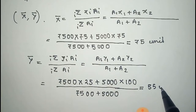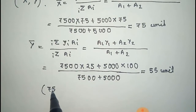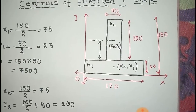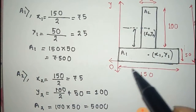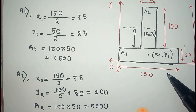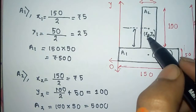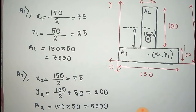Thus we get the coordinate point of the centroid as (75, 55) with respect to the XY-axis. Looking at this point — 75 along X and 55 along Y — this point can be taken as the centroid of this inverted T-section.